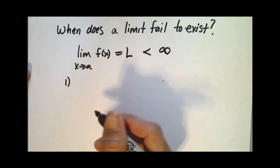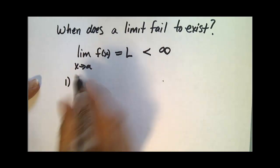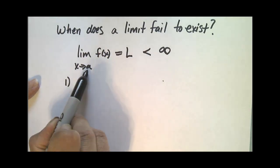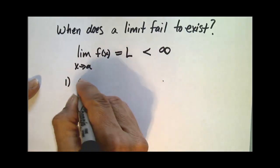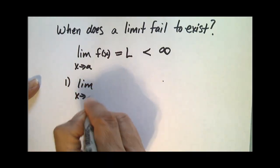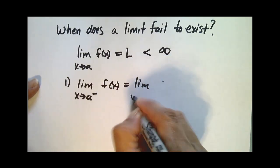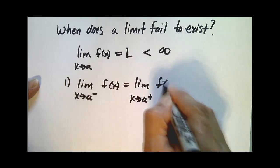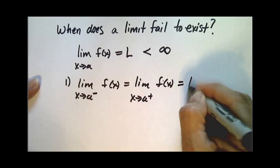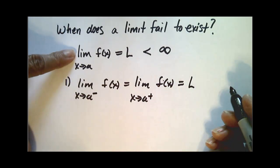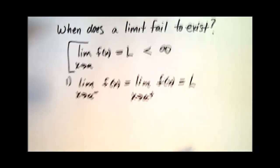Another thing it says, which we talked about in previous videos, is that the limit as x goes to a means that as it goes to a from either side of a. So we know that the limit as x approaches a from the left equals the limit as x approaches a from the right, and both of those equal l.